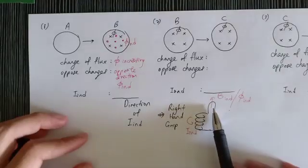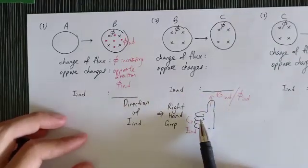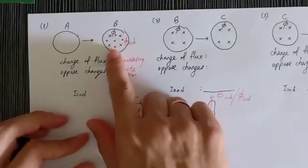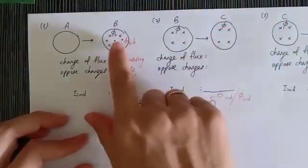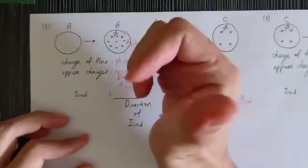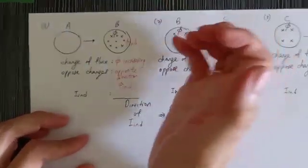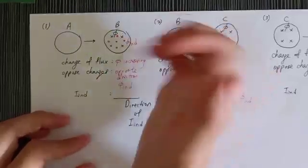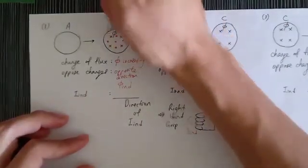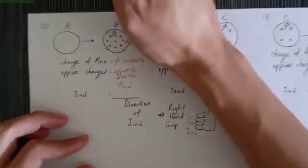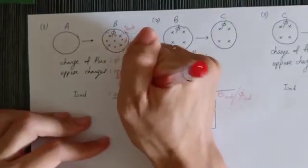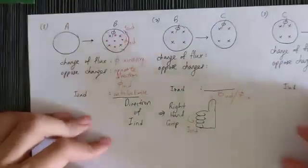The induced flux will be out of the page. Then we use the right-hand grip rule to determine the direction of induced current. The thumb represents the magnetic field and the fingers represent the current. Referring to the induced flux — the induced flux is going out of the page, so our thumb points out of the page, and the fingers give the current direction. The induced current is anti-clockwise.